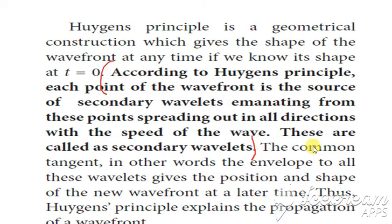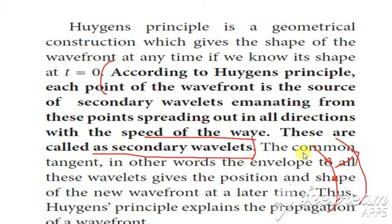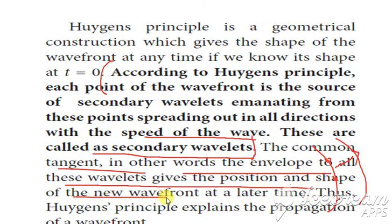Each point on the wavefront acts as a source of secondary wavelet, and that moves with the speed of the wave. These are called secondary wavelets. The common tangent — in other words, the envelope to all these wavelets — gives the position and the shape of the new wavefront. When you draw a tangent to this, that gives the position and also a new wavefront.